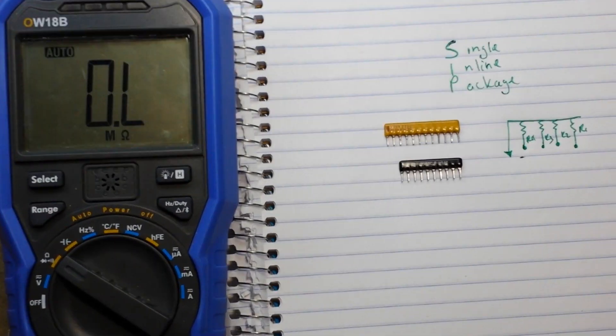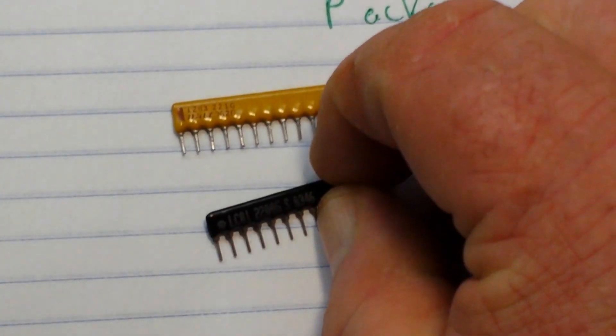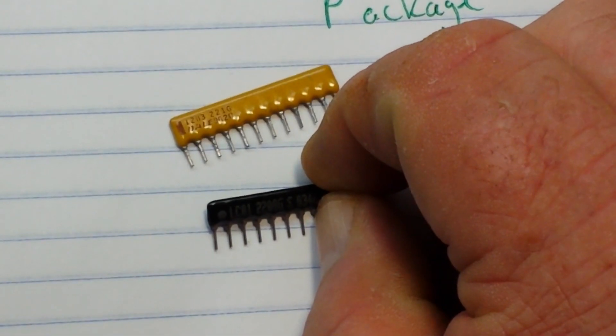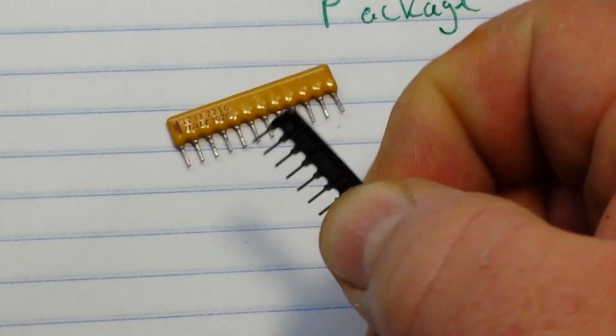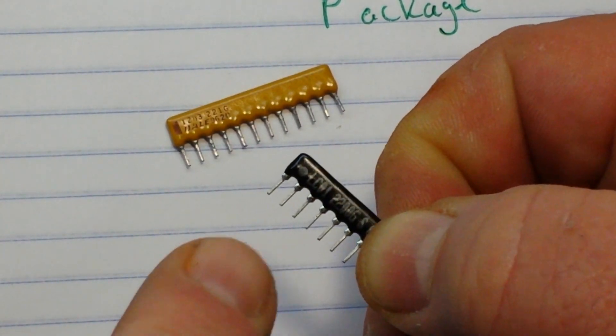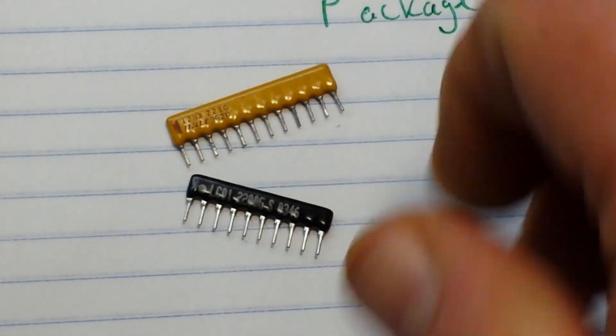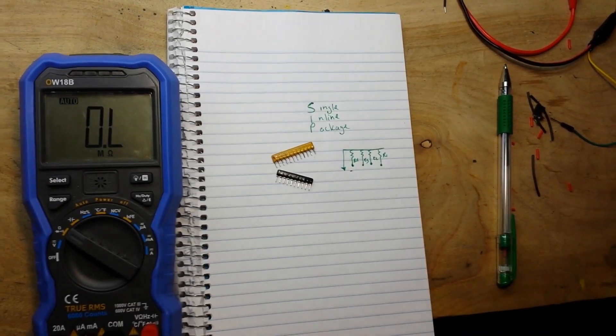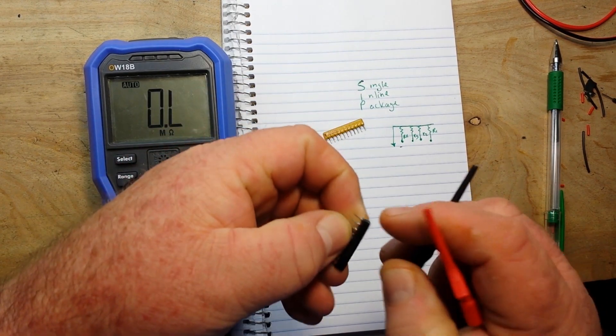You see it? Well maybe if I focus, focus, focus, try it again. There we go, you see that little dot right there? That is telling you which is the common pin.